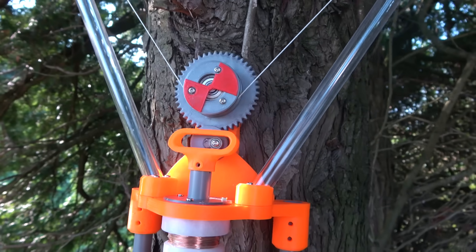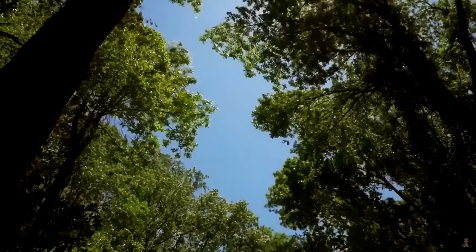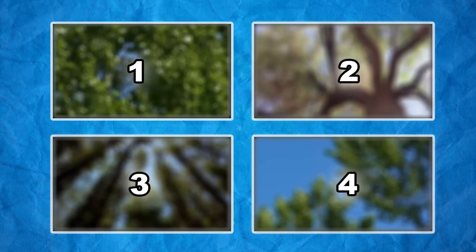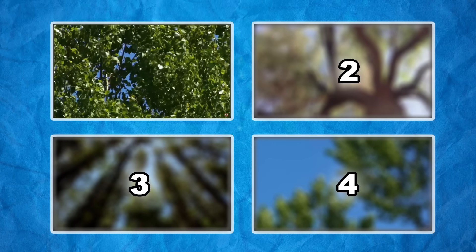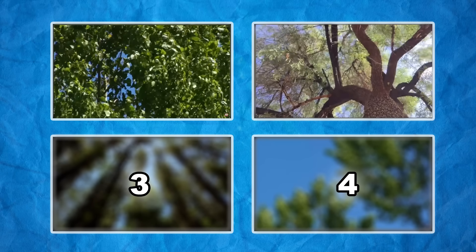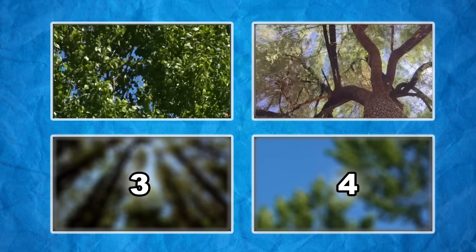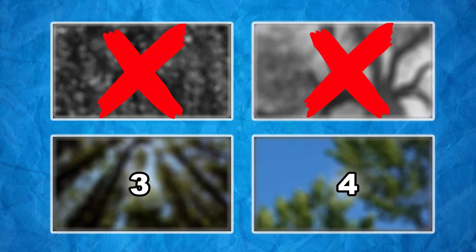But before we get to that, it's important to know in what ways trees move, because we can basically divide the movement of a tree into four different groups. We have the trembling of the leaves and the twisting of the trunk, for example. But both of those movements are pretty much useless for what we're trying to achieve. Luckily, there are still two other movements that are more suitable for the job.